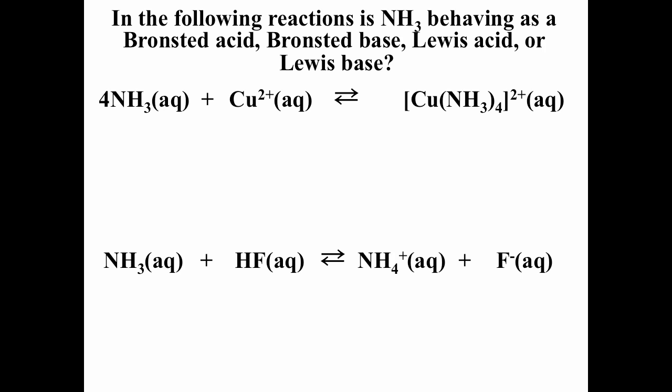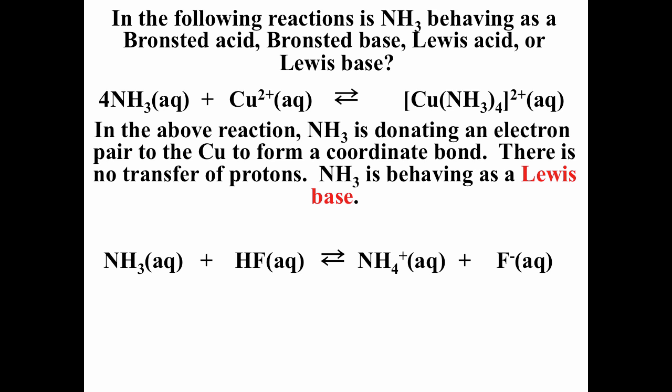Looking at the top reaction — ammonia plus copper ions going to a copper-ammonia complex — one question you could be asked is whether ammonia is behaving like a Brønsted acid, Brønsted base, Lewis acid, or Lewis base. Notice there's no transfer of hydronium ions, so it cannot be a Brønsted acid or base. But ammonia is donating an electron pair to the copper, so the ammonia is a Lewis base. Lewis is more general, so you can have something being a Lewis base that is not a Brønsted base.